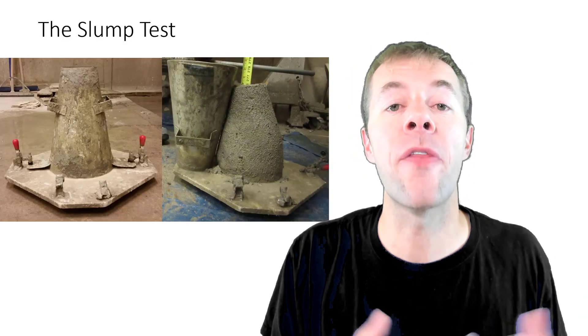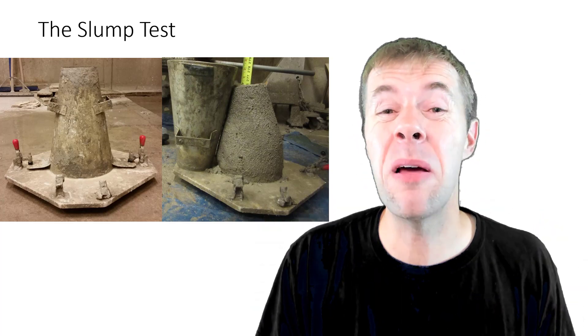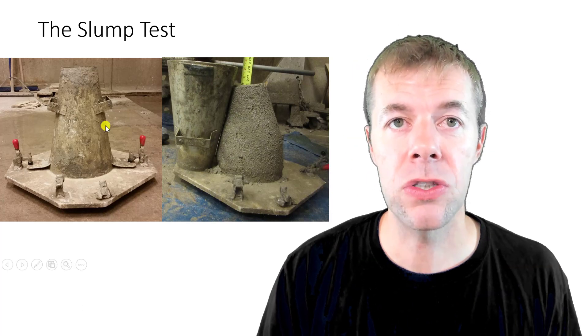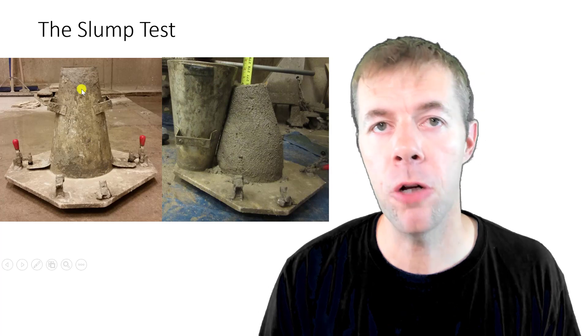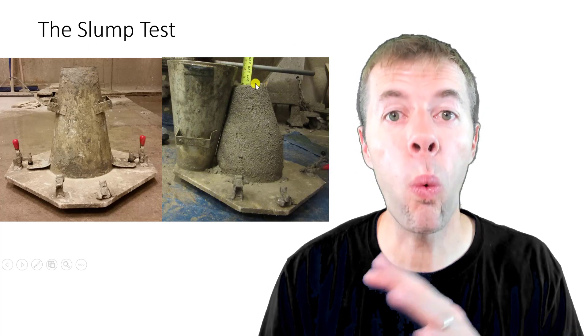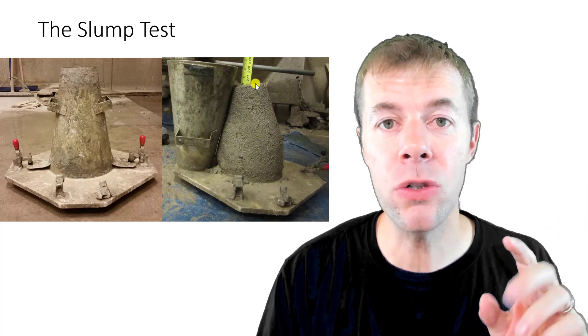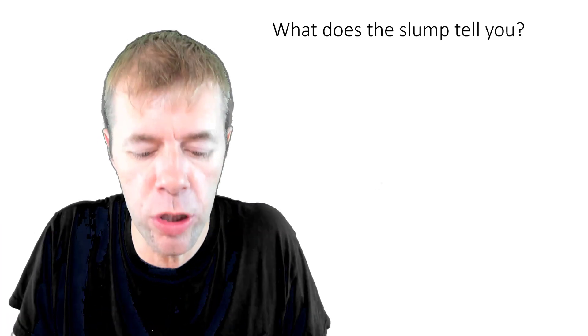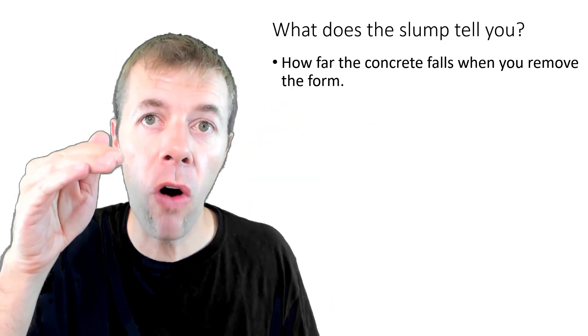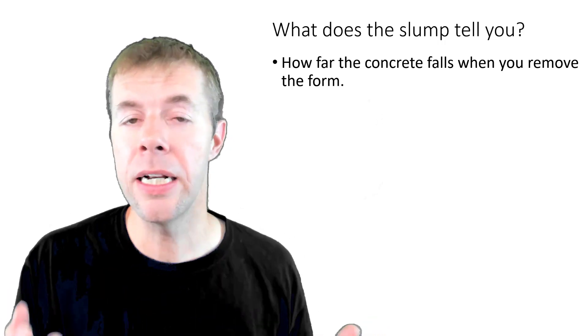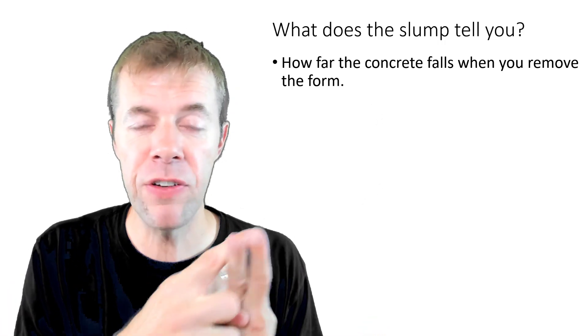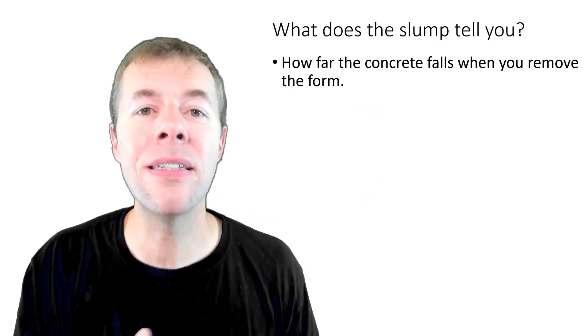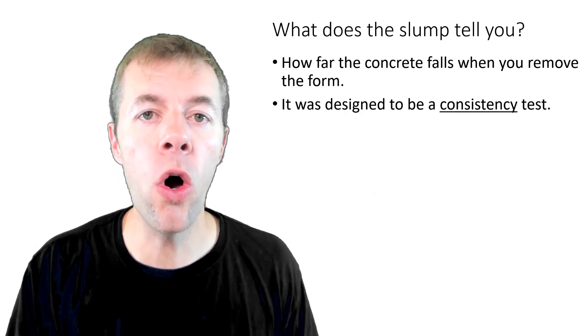A lot of times people like to talk about the slump test. This test is pretty cool, developed by a guy named Duff Abrams, God bless Duff Abrams, in 1911. He had this steel mold that filled up in a constant manner. You pulled it off and you measure how far it fell down. This is a widely used test, very commonly used, and some people even like to specify it. So what does that test tell you? It really tells you that when you pull up the mold, how far does the concrete drop? That's what it tells you. It doesn't tell you about pumping. It doesn't tell you about if it's going to fill in the rebar. It doesn't tell you if it's going to work well in a slip form pavement. It was designed to be a consistency test. Tell you load to load how the concrete changes.